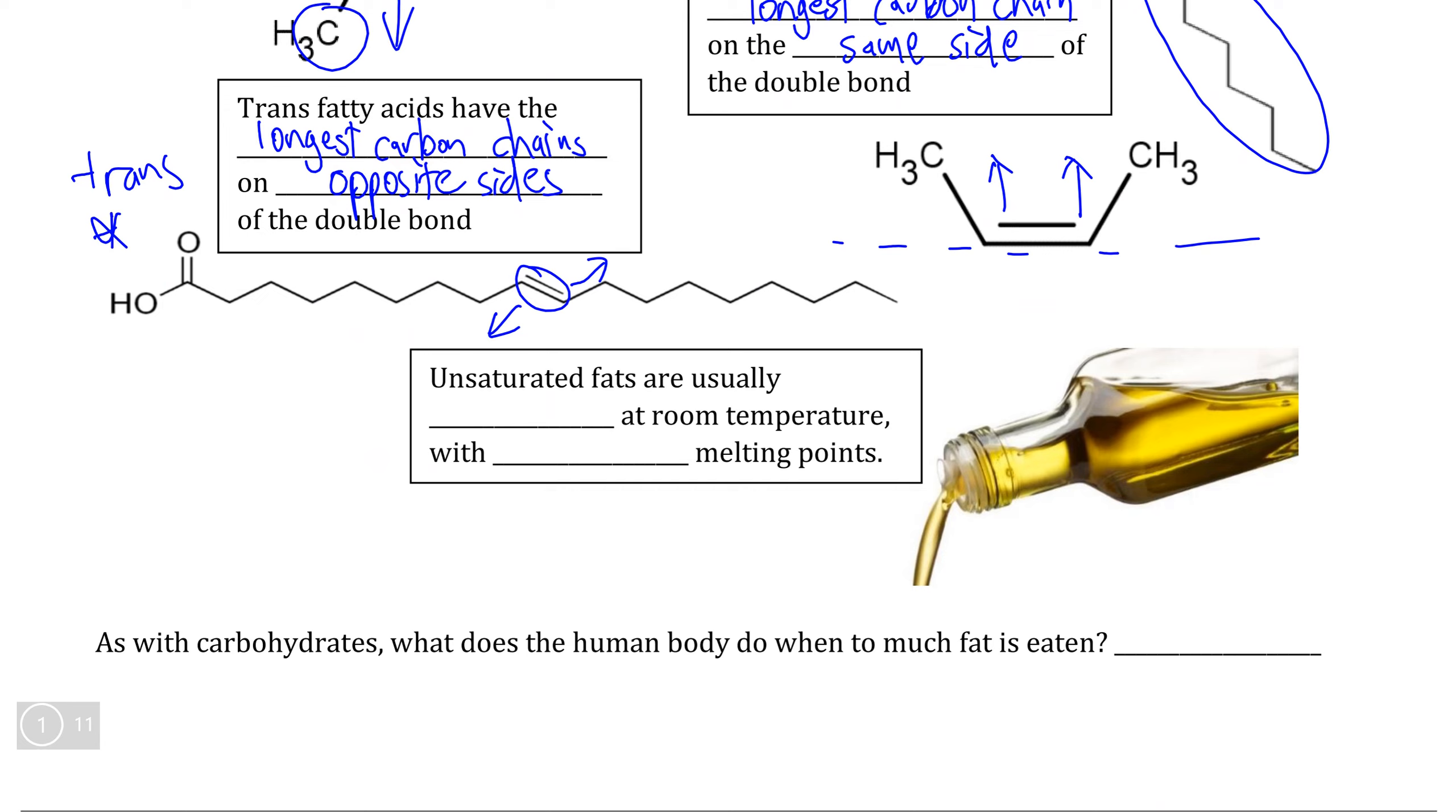Unlike with saturated fatty acids, unsaturated fatty acids, because they don't have as many hydrogens in their structure, tend to be liquids at room temperature with much lower melting points, which is why most of the plant-based oils such as olive oil, sunflower oil, or canola oil are all liquids. And therefore we can see that these are all examples of unsaturated fatty acids.